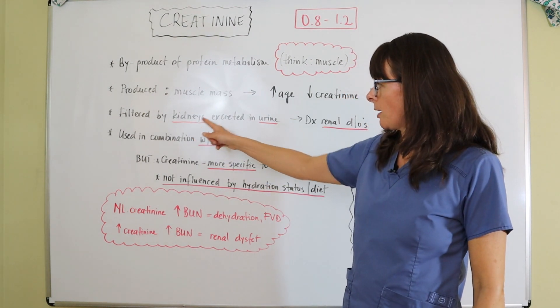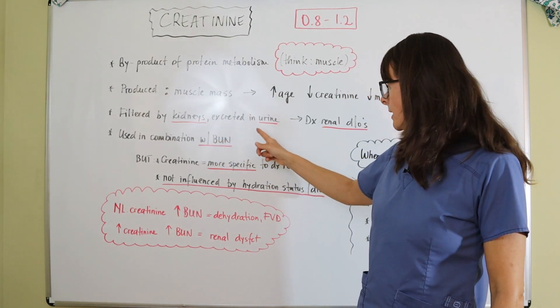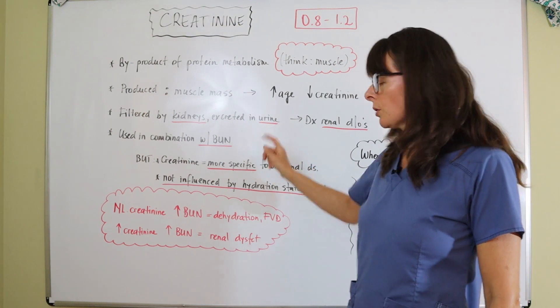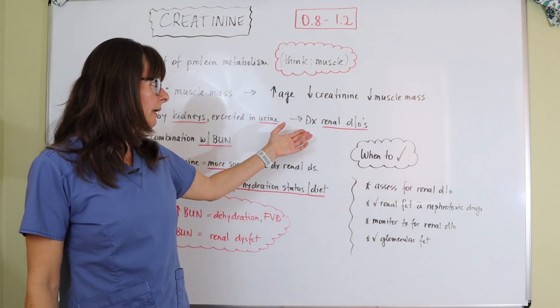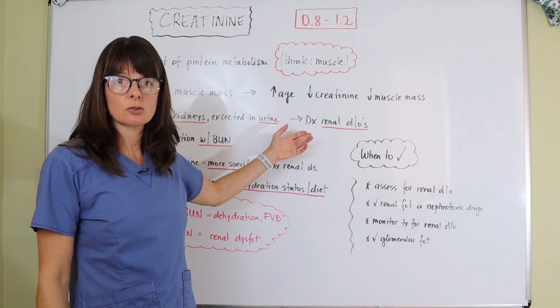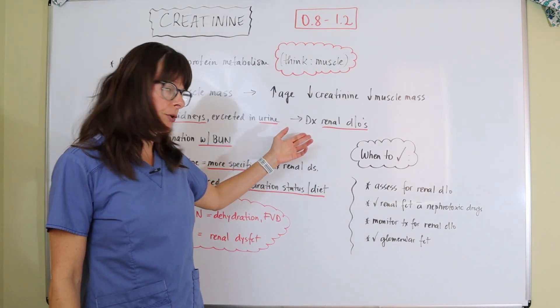Creatinine is usually filtered out by the kidneys and then excreted in the urine, and so that means that we use it very commonly to diagnose any kind of renal disorders or monitor those.